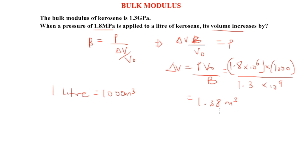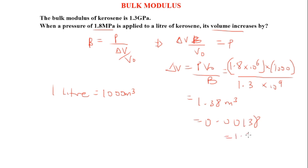Doing this on the calculator gives 1.38 × 10⁻⁶ m³. To convert to litres, divide by 10⁻³, which gives 1.38 × 10⁻³ litres, which is the same as 1.38 millilitres.